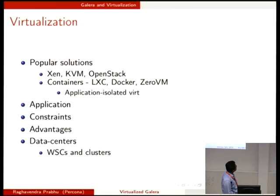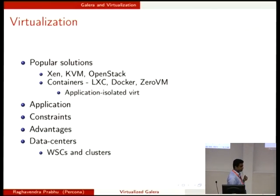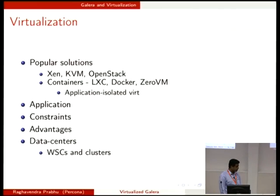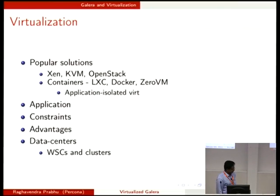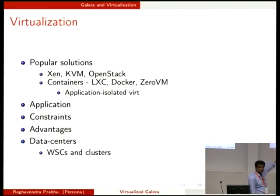So, virtualization constraints. The constraints when using virtualization should be obvious — one of them is the hardware, performance, and those things. The advantages: if you are using virtualization, you are not underusing your hardware, and that's one of the applicable benefits here. And again, high availability, which I mentioned. The cloud and data centers — I mentioned WSC, warehouse-scale computing.